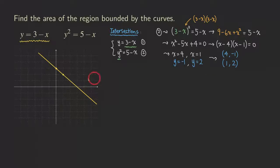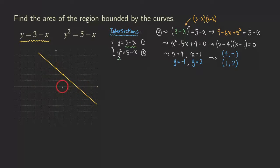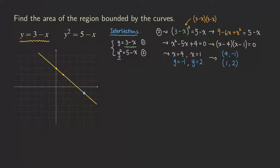We can now plot these intersection points on the straight line right now, because those are the points where the line and the parabola cross — so they must also lie on the line. We get the point (4, −1) and the point (1, 2) plotted as the two intersection points.